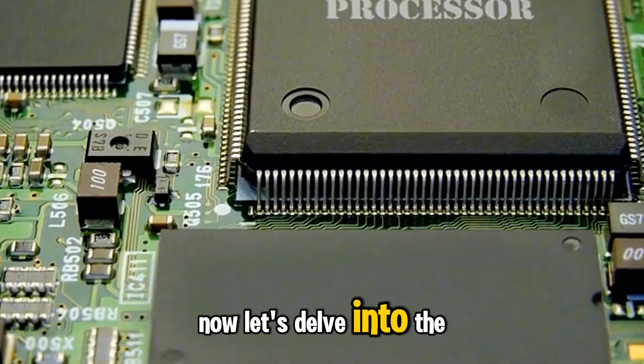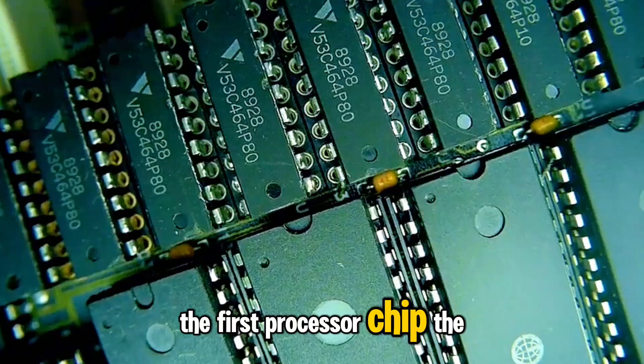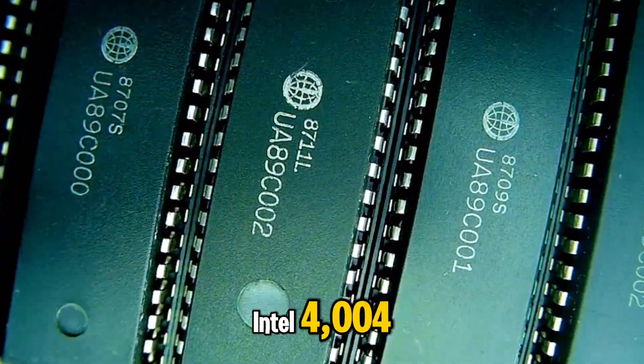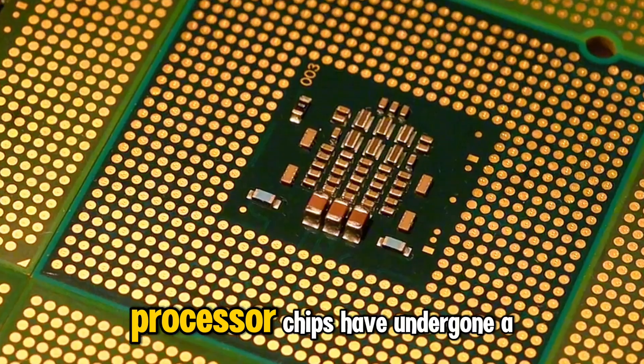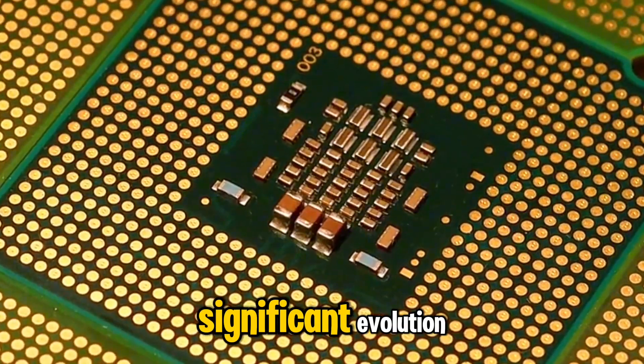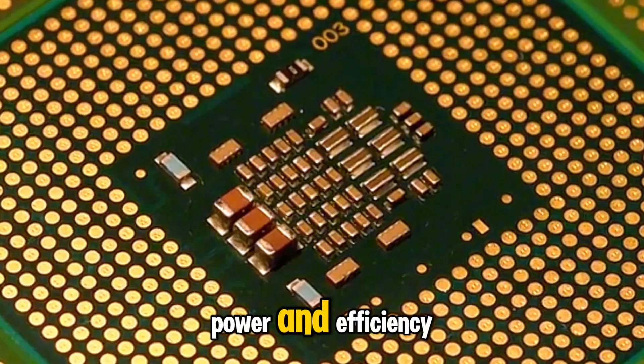Now, let's delve into the history of processor chips. The first processor chip, the Intel 4004, was introduced in 1971. Since then, processor chips have undergone a significant evolution, with each generation offering more power and efficiency.